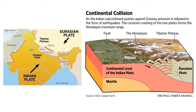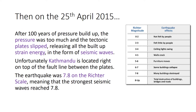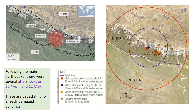After years of pressure building up, on the 25th of April 2015 the tectonic plates slipped, and all the energy built up from those plates pushing together was suddenly released in the form of seismic waves. These seismic waves caused the ground to vibrate and shake — what we call an earthquake. On the Richter scale this measured 7.8, making it an extremely powerful earthquake. Unfortunately, Kathmandu, the main city, is located right on that boundary between the plates.